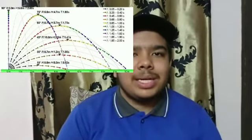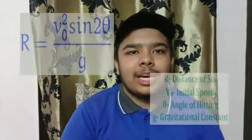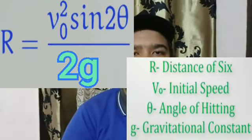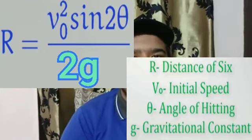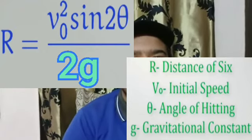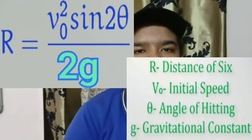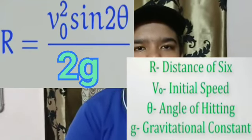When the batsman hits the ball at a certain angle, it follows a parabolic path. The displacement of the ball depends upon three factors: the angle of projection theta, the velocity of projection V, and the gravitational constant G. To calculate the displacement, we use the formula: displacement = V² × sin(2θ) / 2G. This tells us the displacement between the point of projection and the point of contact of the ball with the ground.